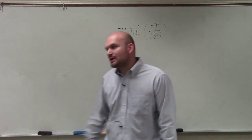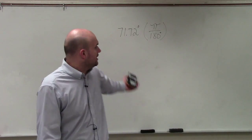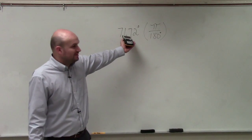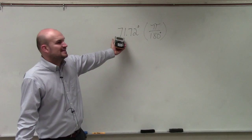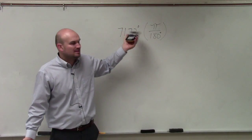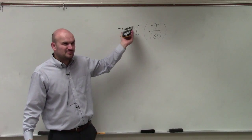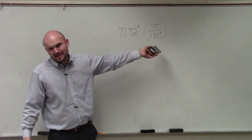Now, in this example, we're not going to have anything we can reduce. If you remember, if we had like 60, I could reduce that fraction. But since I have 71.72, it's not going to be easy to reduce any fraction with this.